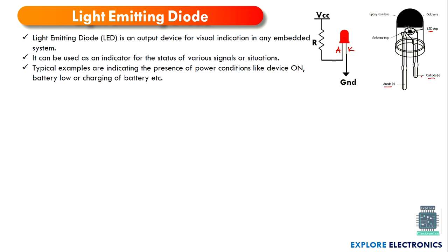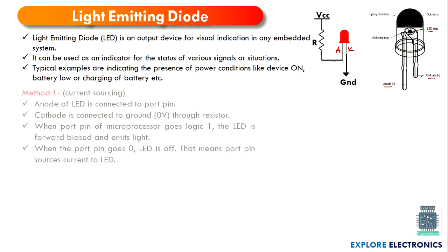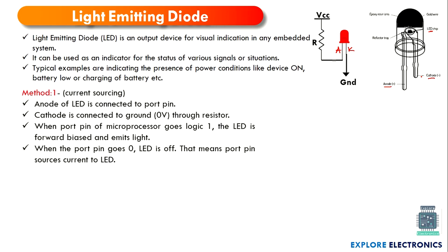To make this LED turn on or turn off there are two methods. One is the current sourcing method and the other is the current sinking method. In the current sourcing method, a LED is connected to a microcontroller port — since it is an output device, the LED is connected to a port such as PD0. This port may give the value 0 or 1 to turn the LED on and off.